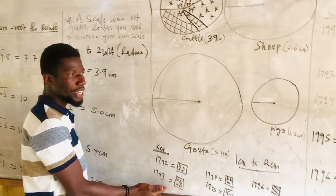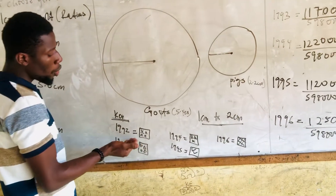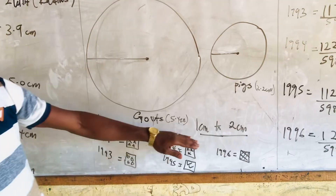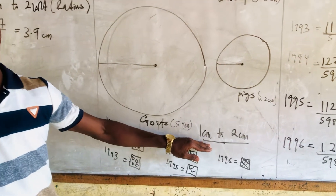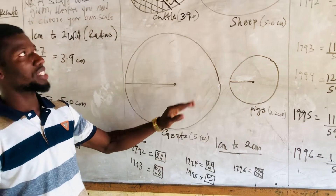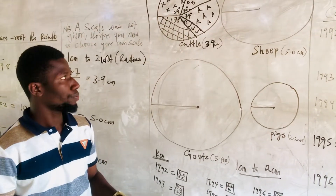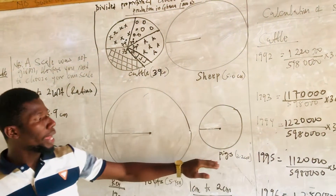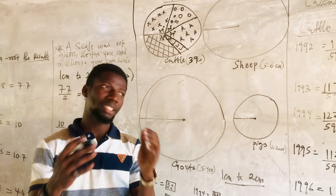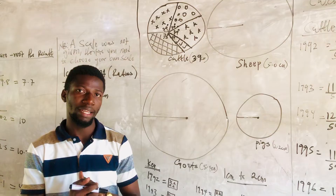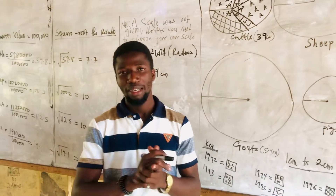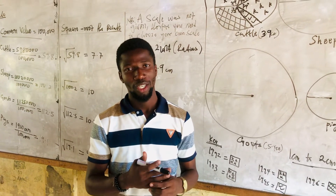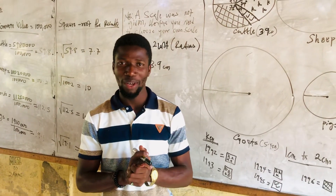Remember to include a key so the examiner knows which year corresponds to which shading. Also remember to write down the scale you chose to obtain your circles. I will leave the sector calculations for sheep, goats, and pigs for my dear students to practice. Thank you for watching and learning from our free YouTube videos. Remember to subscribe. Have a wonderful day.